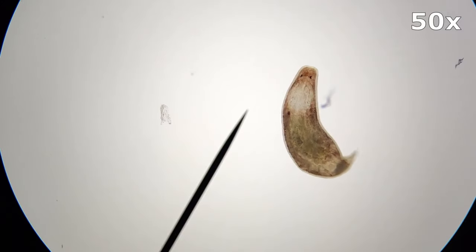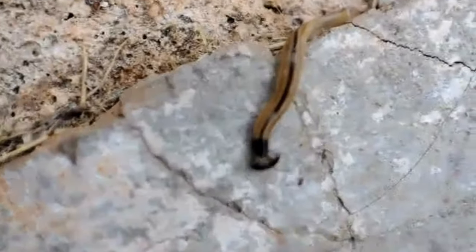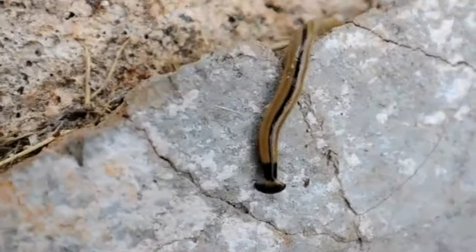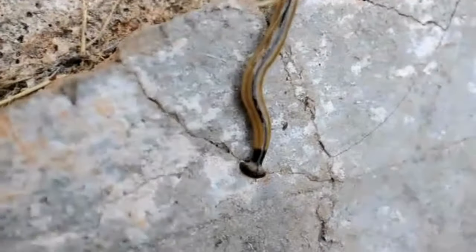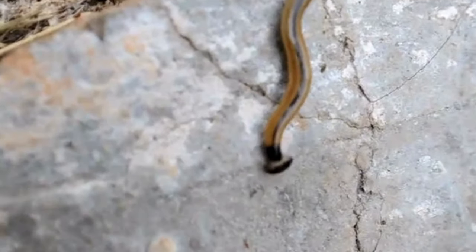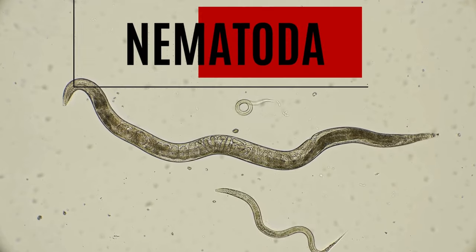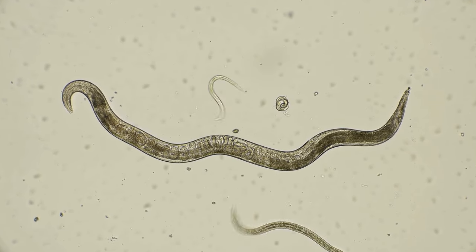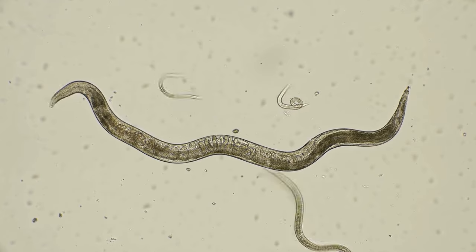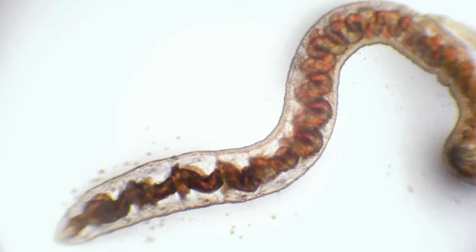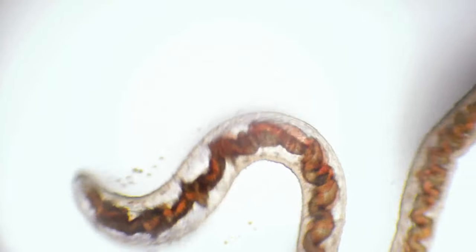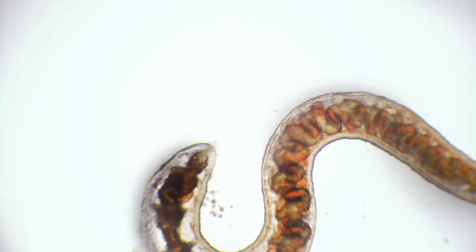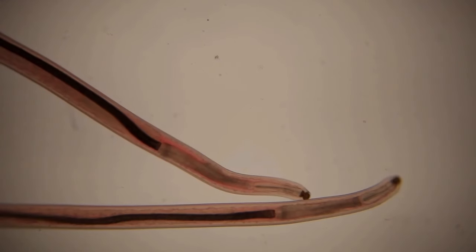But other flatworms are free living, which feed on bacteria, smaller worms, and even dead organic matter. Another phylum that exhibits bilateral symmetry, but has more of a cylindrical shape, is the phylum Nematoda — the roundworms. These parasitic worms are some of the most abundant animals in the world, having over 28,000 different species, with around 16,000 being parasitic.